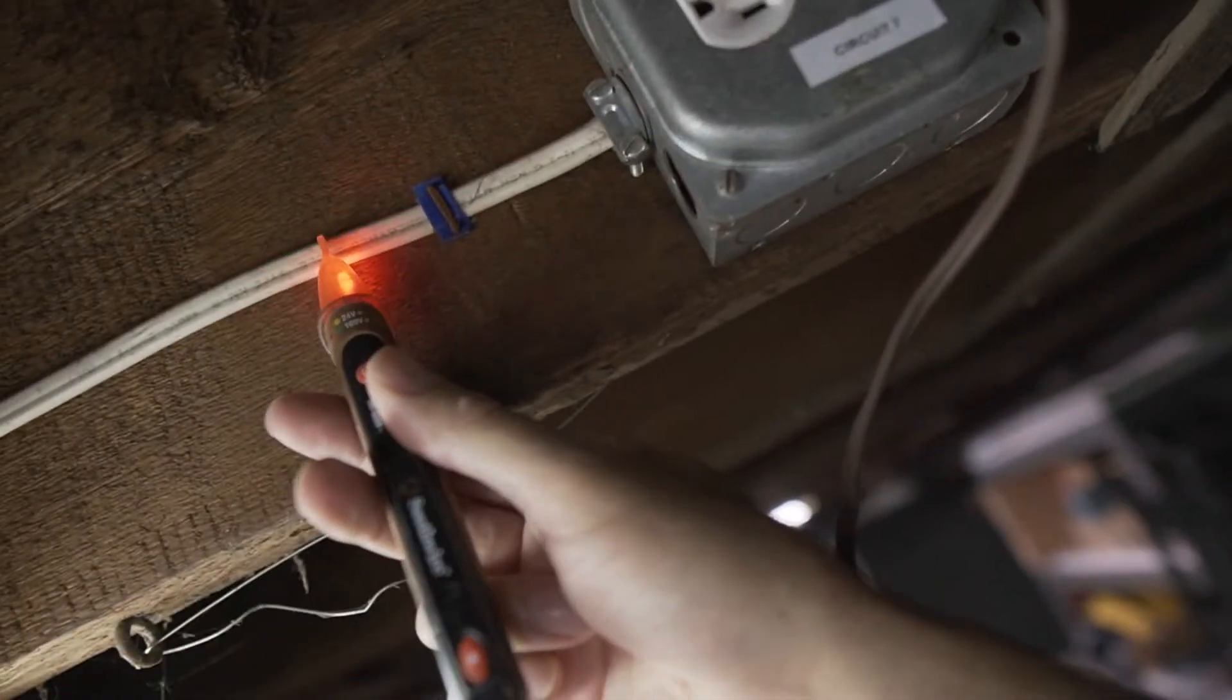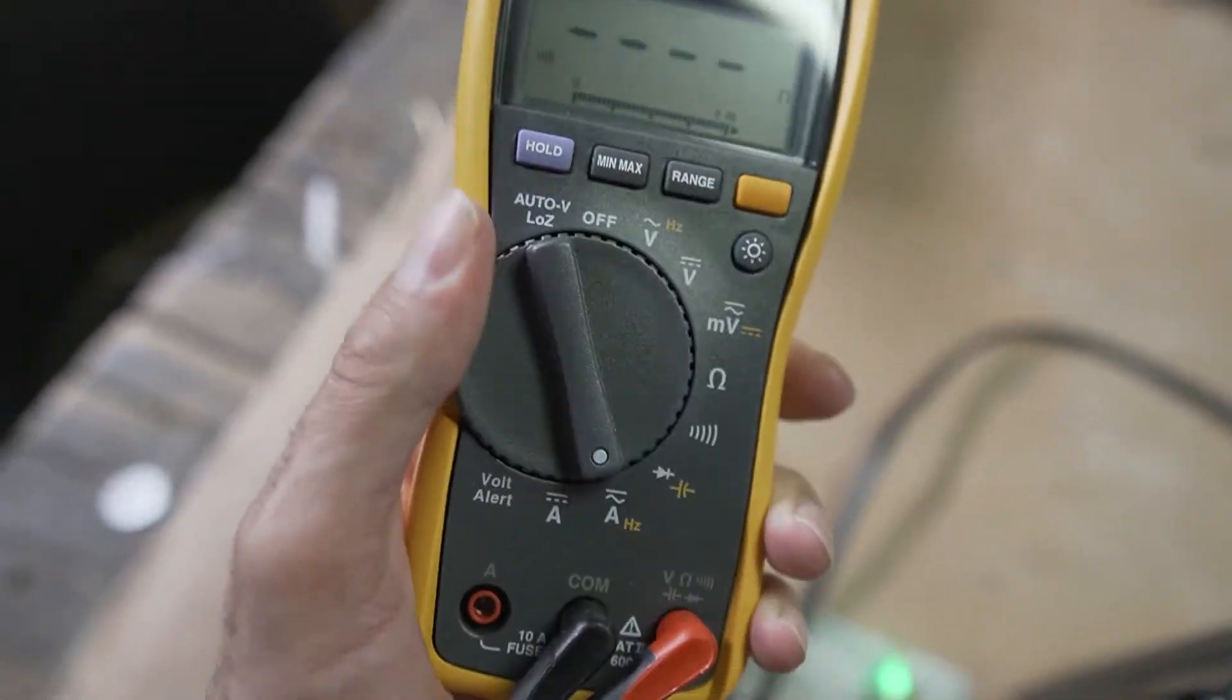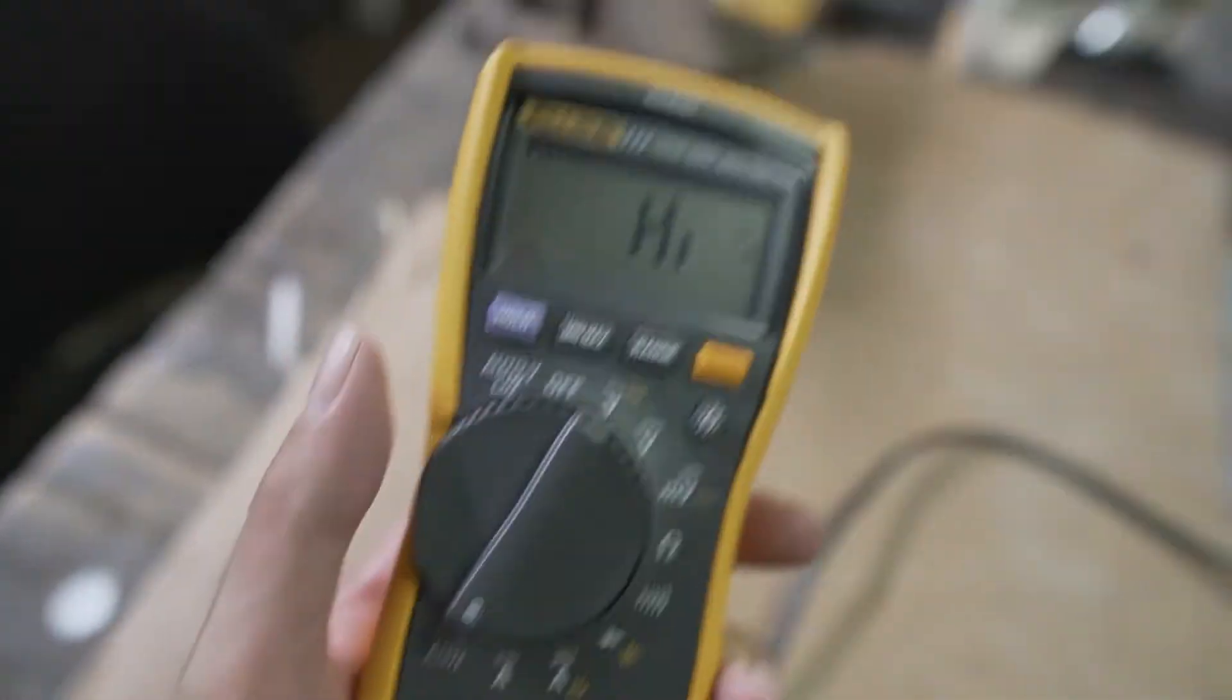Now, if you usually use one of these contactless detectors to see if a circuit is live, this multimeter actually has that built in. So you just switch it to the volt alert mode right here.